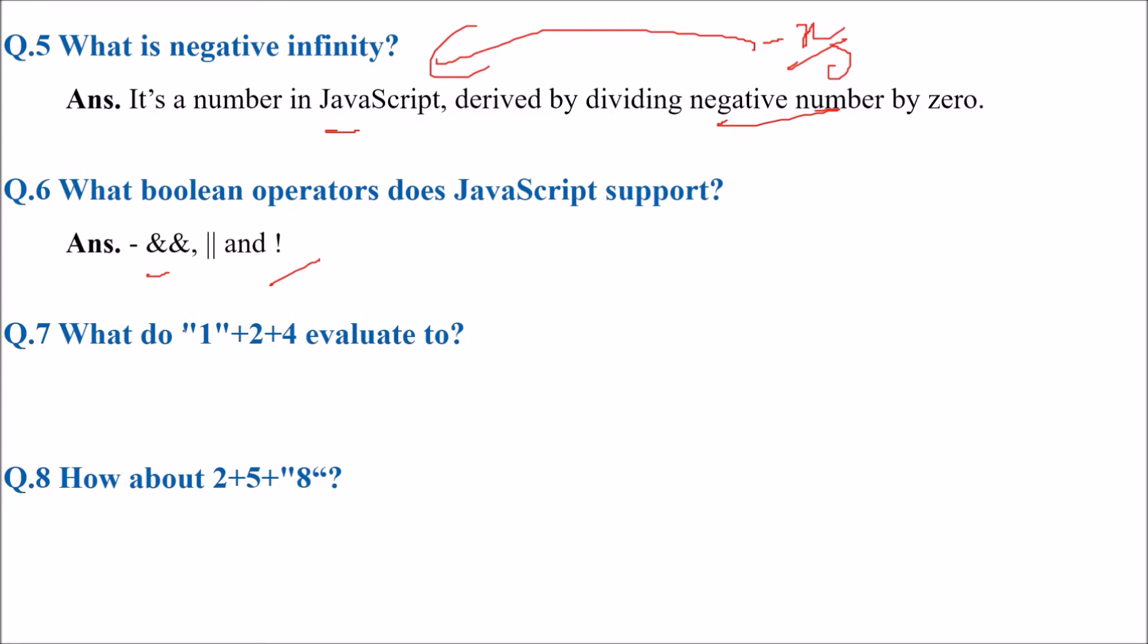What do double quotes 1 plus 2 plus 4 evaluate to? It is going to evaluate to 124 because 1 is a string, so everything is a string. The result will be 124. Everything will be taken as string and they will be concatenated.